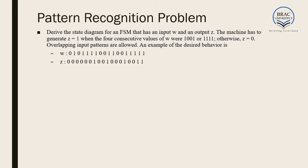For the first problem of pattern recognition, consider the following problem. We have to derive the state diagram for a FSM for input W and output Z. The machine has to generate Z equal to 1 when four consecutive patterns are either 1 0 0 1 or 1 1 1 1. In all other cases Z is equal to 0.